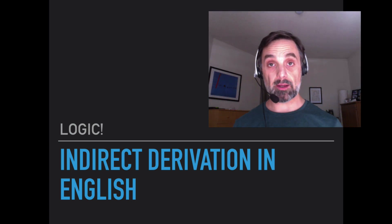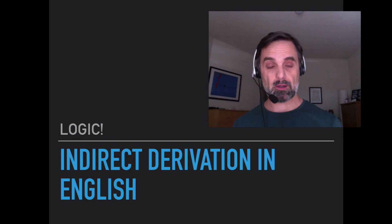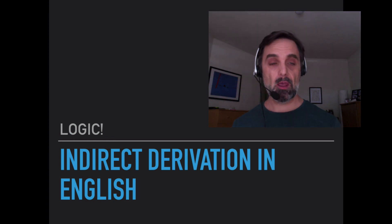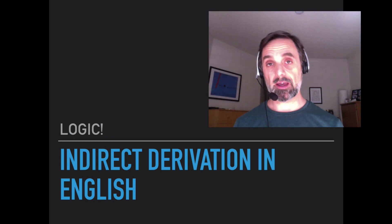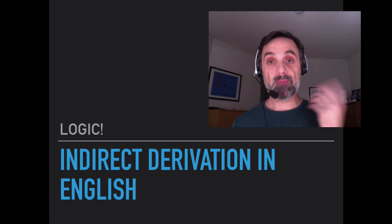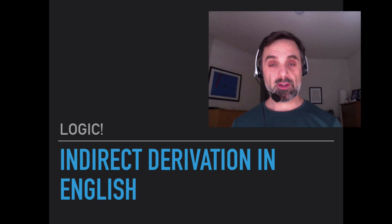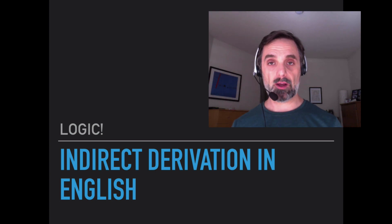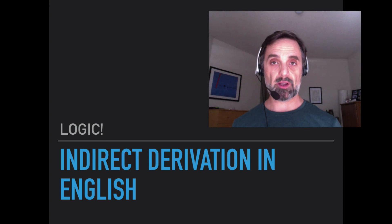In this unit, we're going to learn about indirect derivation. So far, we have two derivation methods in our system: direct derivation, and conditional derivation with assumption for conditional derivation. Now we're going to add a third — assumption for indirect derivation — and a new way of boxing and canceling: indirect derivation. In this video, I'll talk about indirect derivation in English. In the next video, I'll explain how it works in the formal system, and then I'll discuss strategy and do some examples.